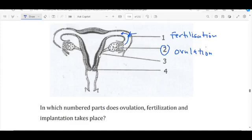That will go through the uterus, then to the walls of the uterus right here in the part labeled 3. That's where implantation is going to take place.